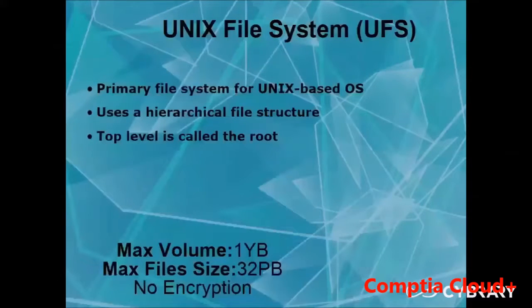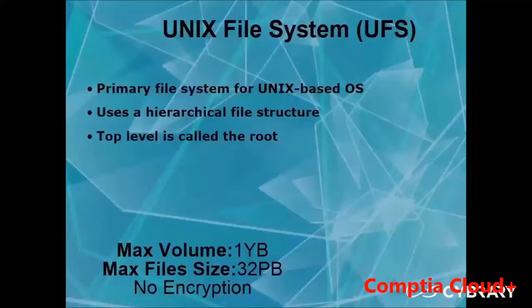UFS — the Unix File System — was originally developed for Unix-based operating systems. To load a Unix machine you have to have UFS installed. It uses a hierarchical structure where the top level is called root, represented by a slash. The max volume size is one yottabyte, and the max file size is 32 petabytes. However, UFS does not offer any encryption, so you are not able to encrypt your hard drive.